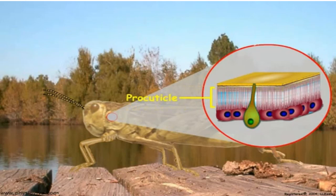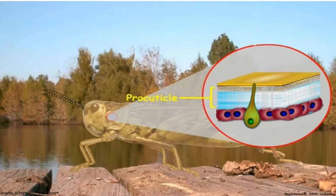Pore canals may provide an avenue for the transport of chemicals through the cuticle and probably play a role in transporting the chemicals that comprise the structural parts of the cuticle. The chemicals may diffuse laterally from the canal to form the procuticle at the time of molting. After the cuticle forms, the cytoplasmic extensions retract and the remaining channel becomes the pore canal.